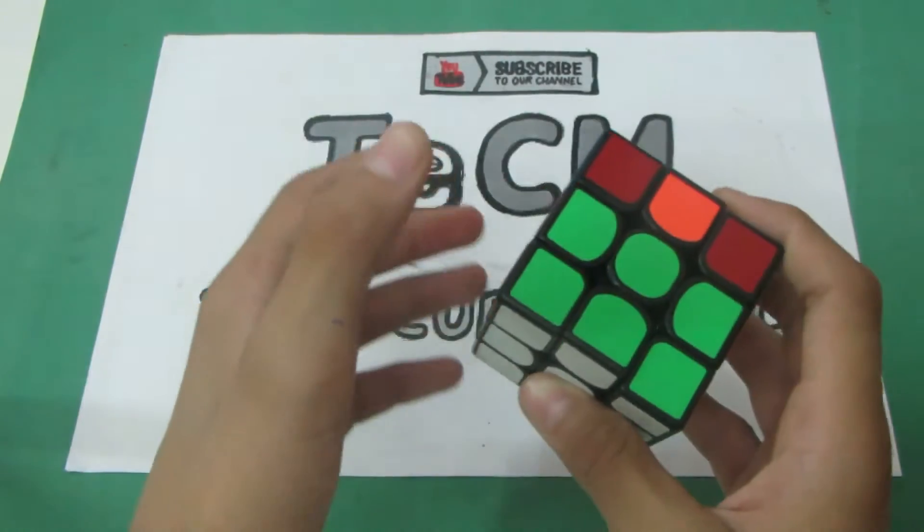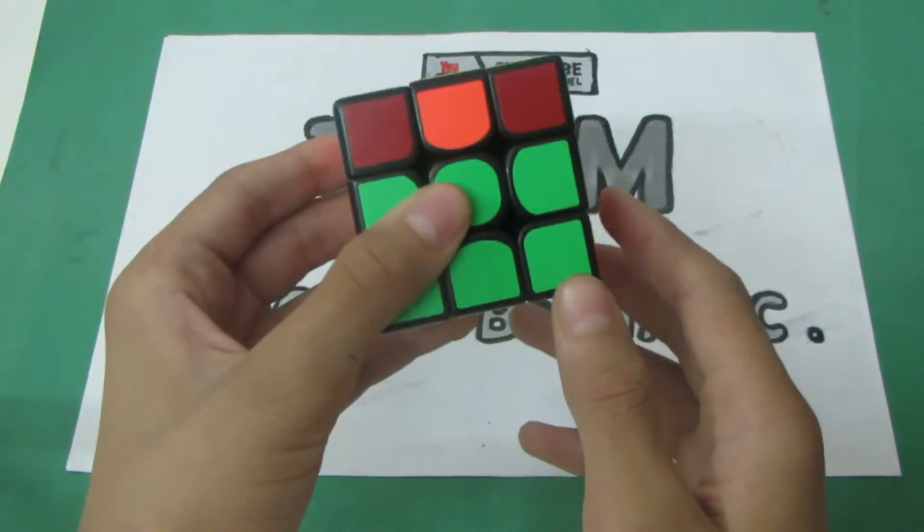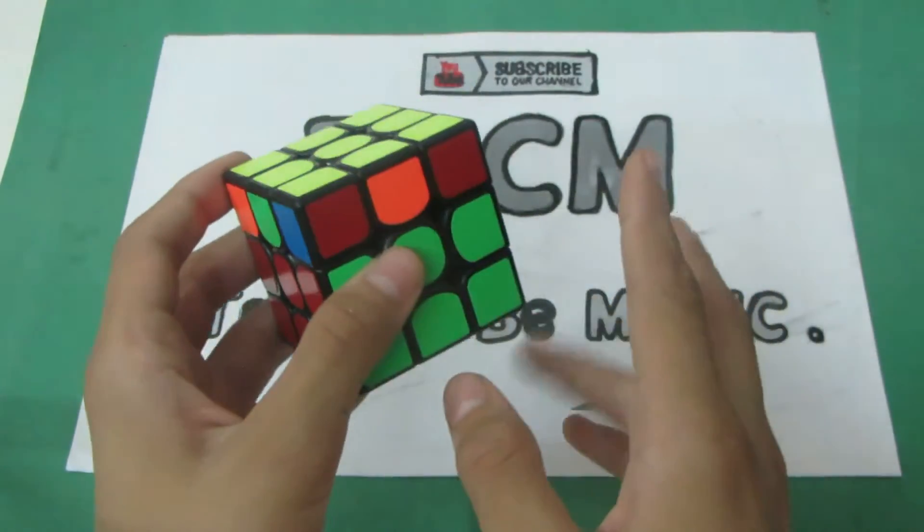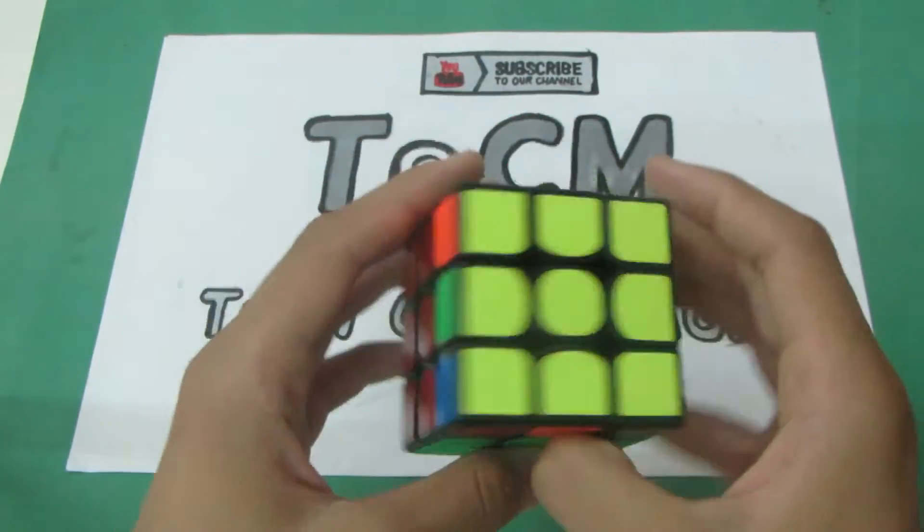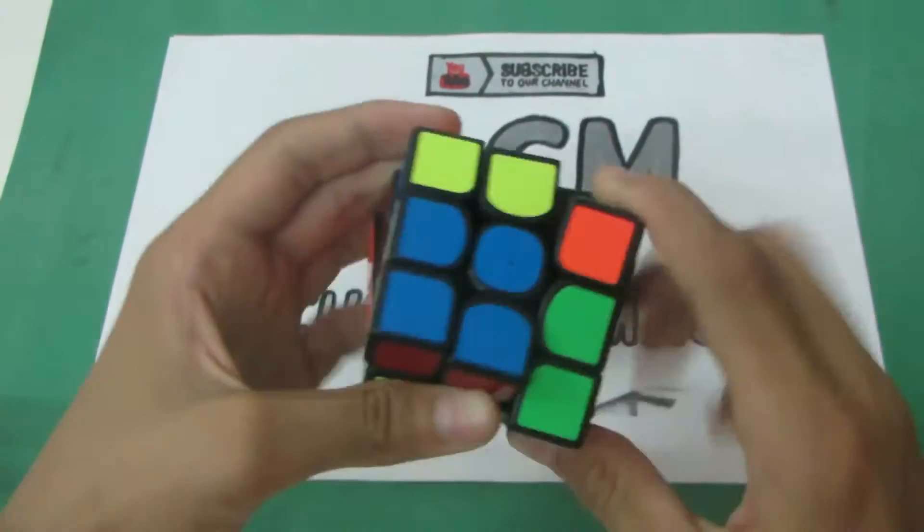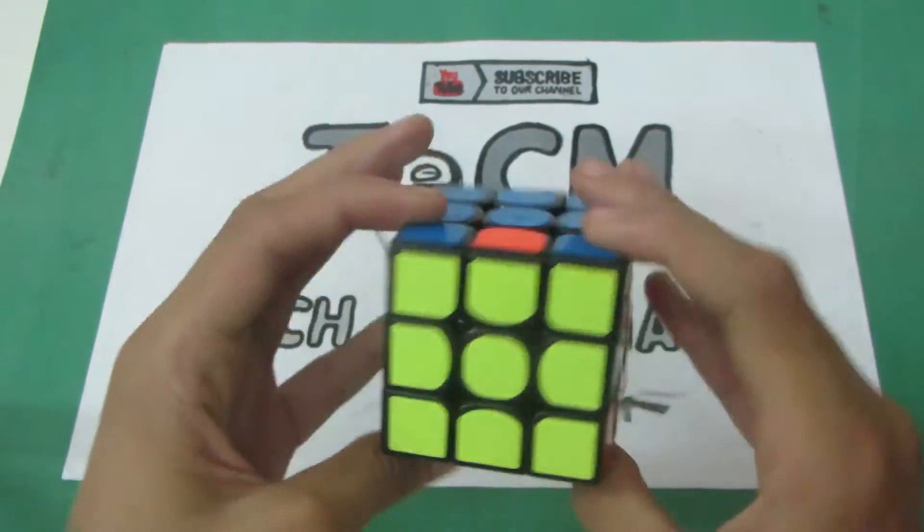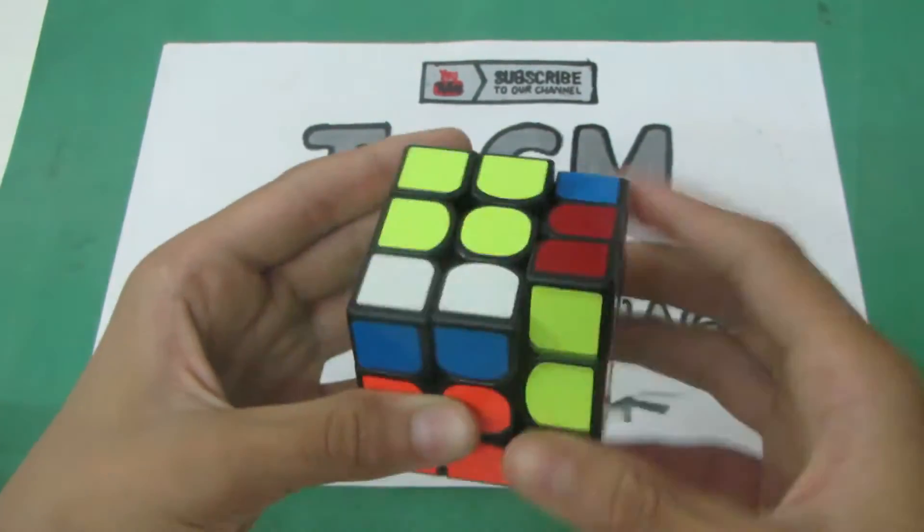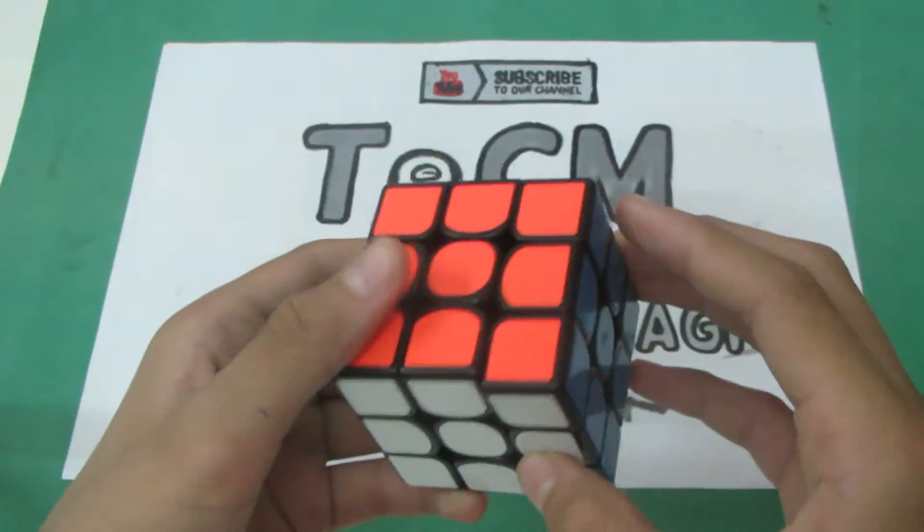The difference between these two is that Two-Look PLL requires you to look at the cube two times. Like you look at the cube first, you identify the case, do the algorithm, and look at the cube once again, identify the case and do the algorithm once again. But in one-look PLL...